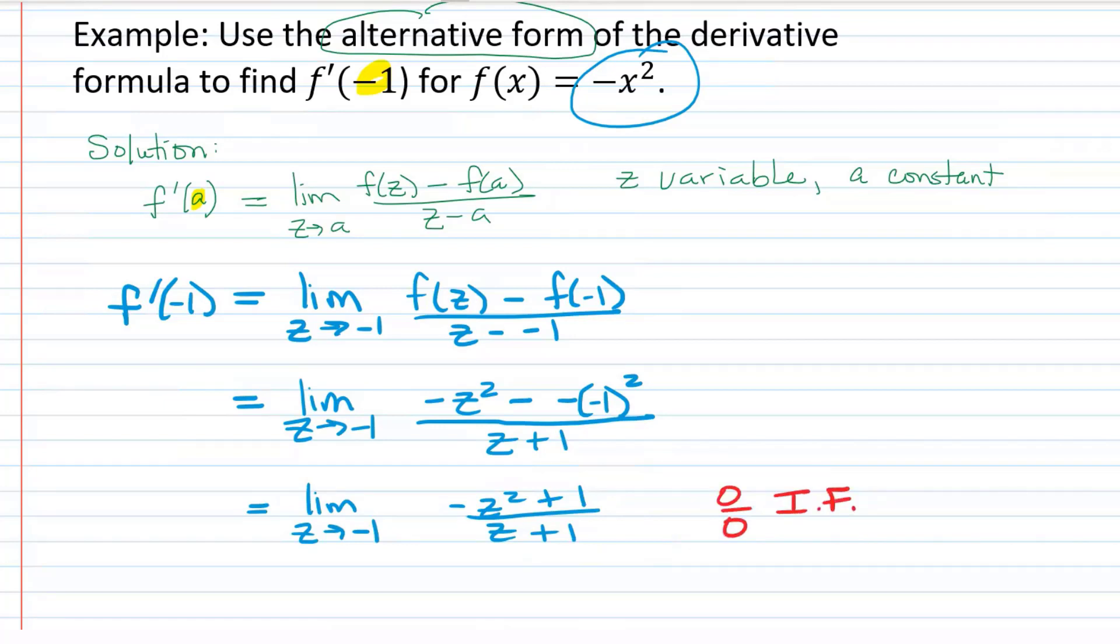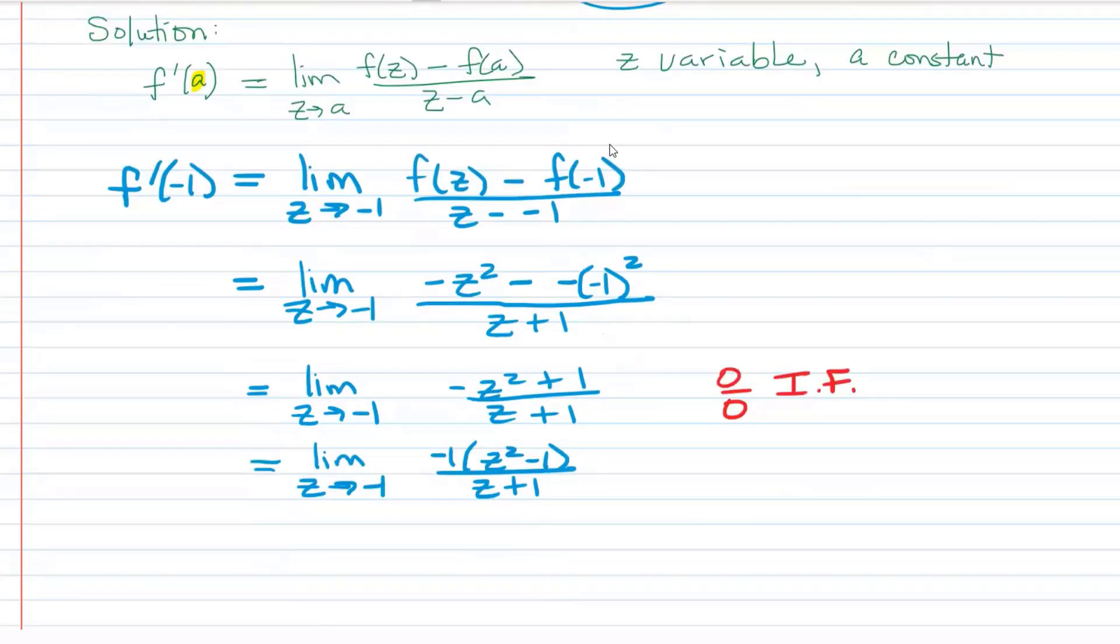What do you mean by expand? You could factor out a negative one. That's fine. So we would have the limit as z approaches negative one of negative one times z squared minus one. And why did you want to do that? So you can factor the top more easily. So that's going to give you the limit as z approaches negative one of negative one times z plus one times z minus one over z plus one. And then z plus one divided by z plus one is just one.